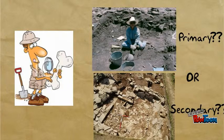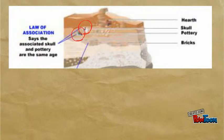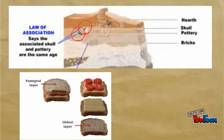The law of association coincides with the law of superposition, meaning that objects found in the same archaeological layer were likely deposited at the same time if conditions allowed for no disturbance.